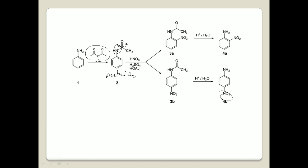Since acetanilide is less basic, protonation of the NH group does not take place rapidly. So we get ortho and para products. But since NHCOCH3 is a bulky group and NO2 is also somewhat bulky, the NO2+ electrophile majorly attacks at the para position. So we get para product as the major product. This amide on hydrolysis gives us the amine — para-nitroaniline as the major product.